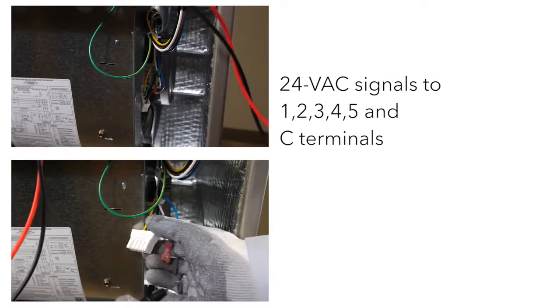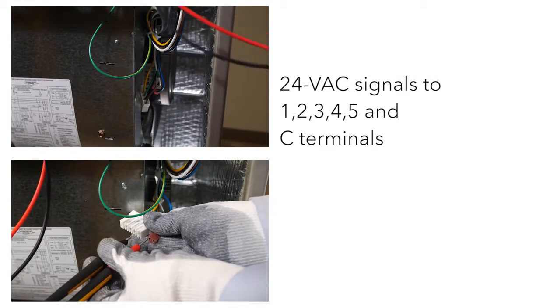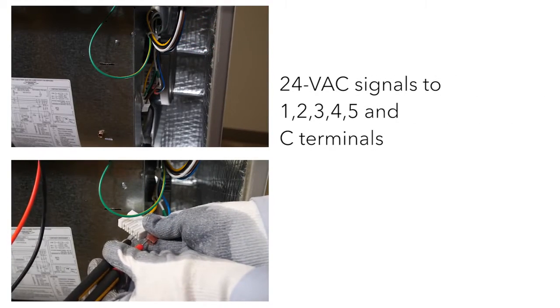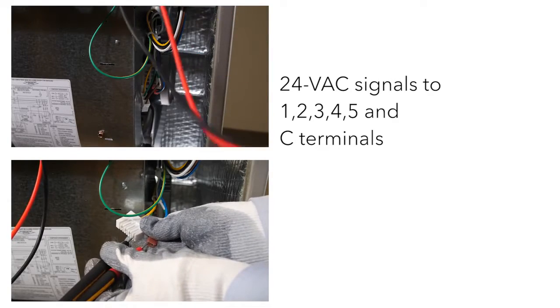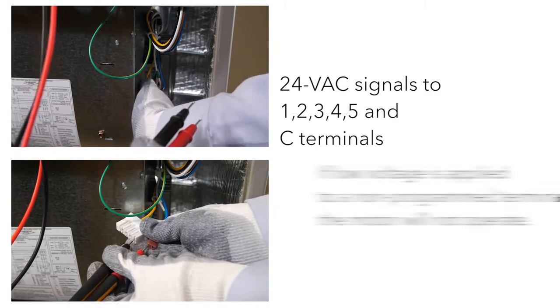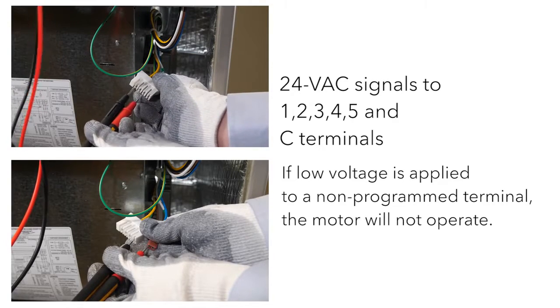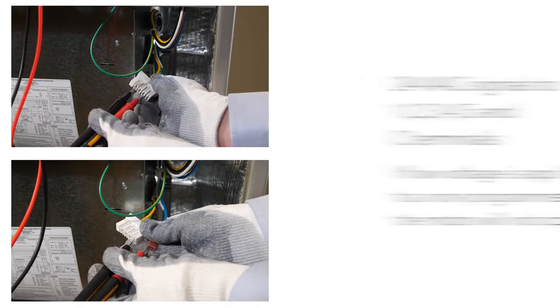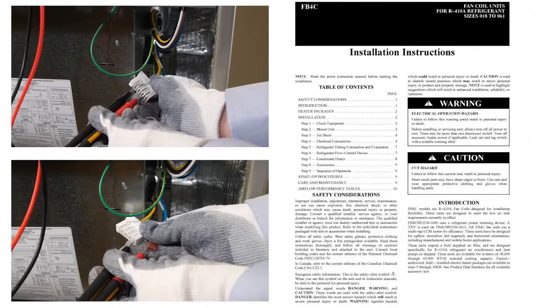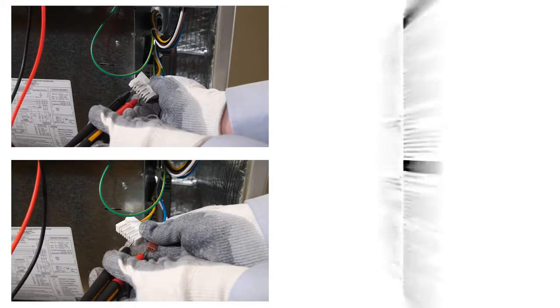The motor is communicated through 24 VAC signals to the 1, 2, 3, 4, 5 and C common terminals. Not all taps are programmed. If low voltage is applied to a non-programmed terminal, the motor will not operate, which is normal. Check the published literature of the unit for airflow delivery tables to see which speed taps are programmed.